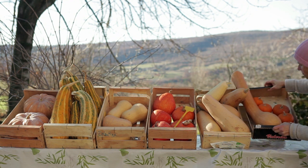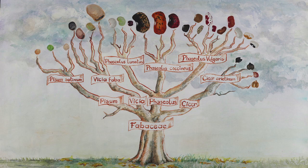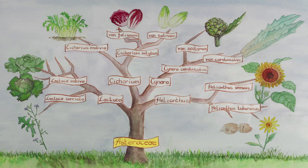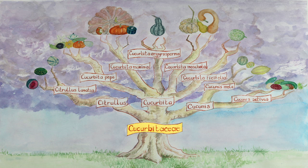In this film we will only use certain Latin names: families such as Fabaceae, Asteraceae, Solanaceae or Cucurbitaceae; then the genuses such as Cucurbita; species such as Cucurbita maxima; and finally the varieties.